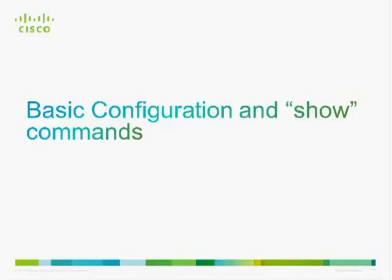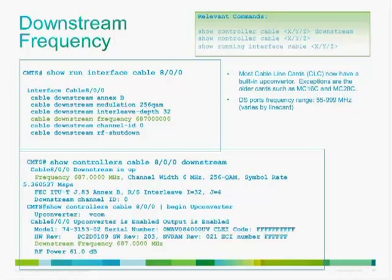Quick review before moving to basic configuration and show commands: like most communication devices, you need transmit and receive for two-way communication. In cable, these are called downstream and upstream from the CMTS perspective. The coax cable reaching the cable modem carries both upstream and downstream frequencies. A MAC domain consists of at least one downstream and one upstream to establish two-way communication. We'll see most of these concepts in the configuration example.